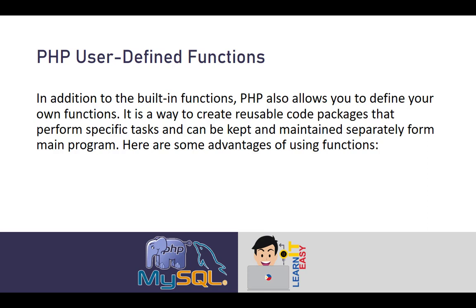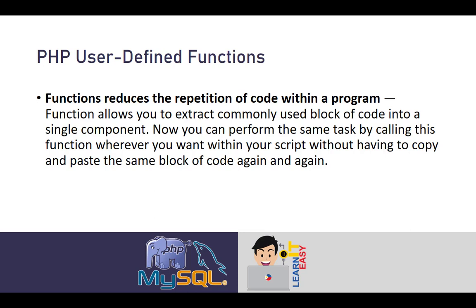Here are some advantages of using functions over procedural coding. First, functions reduce the repetition of code within a program. A function allows you to extract a commonly used block of code into a single component. You can perform the same task by calling this function wherever you want within your script, without having to copy and paste the same block of code again and again.